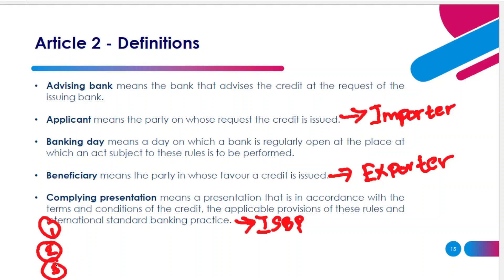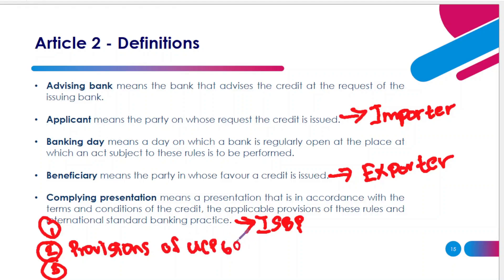Most students think a complying presentation means the documents presented to your advising bank just have to be in line with the credit only — but no, not only the letter of credit. It needs to be in line with the provisions of UCP 600 and ISBP as well. The first thing to match is the terms and conditions of the LC, and after ascertaining compliance with those, you check compliance with UCP 600 and ISBP.